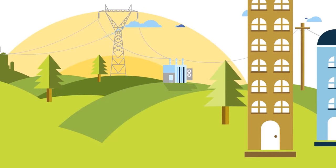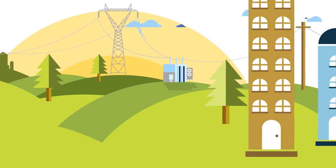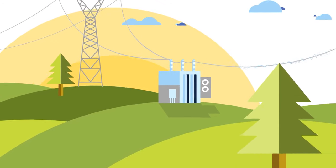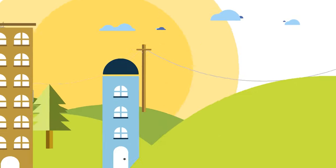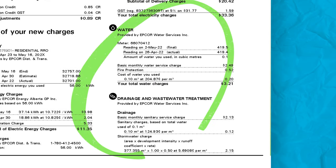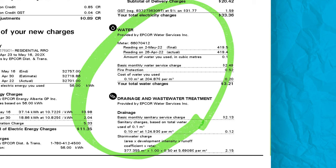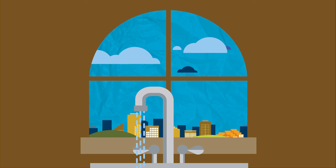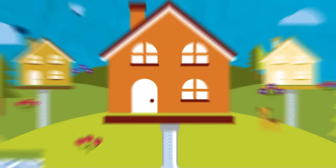This includes maintenance for 7,700 kilometers of distribution wires and 270 kilometers of aerial transmission wires in Edmonton. If you live in Edmonton, you'll see charges and fees for water and drainage usage and services. These charges cover the cost of the amount of water you've used during a billing period and the cost of getting water to and from your home.